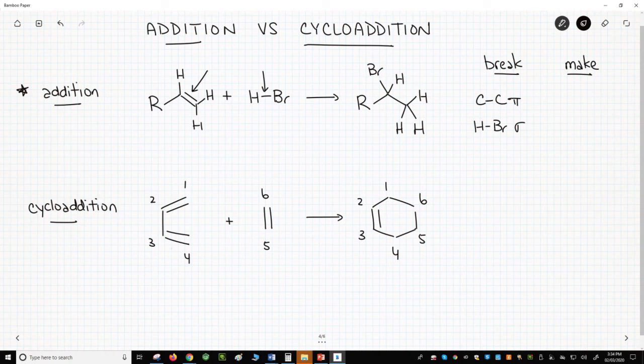And we replace them with a C-H sigma bond and a C-Br sigma bond. This is what happens in an addition reaction. You lose pi bonds and gain sigma bonds.